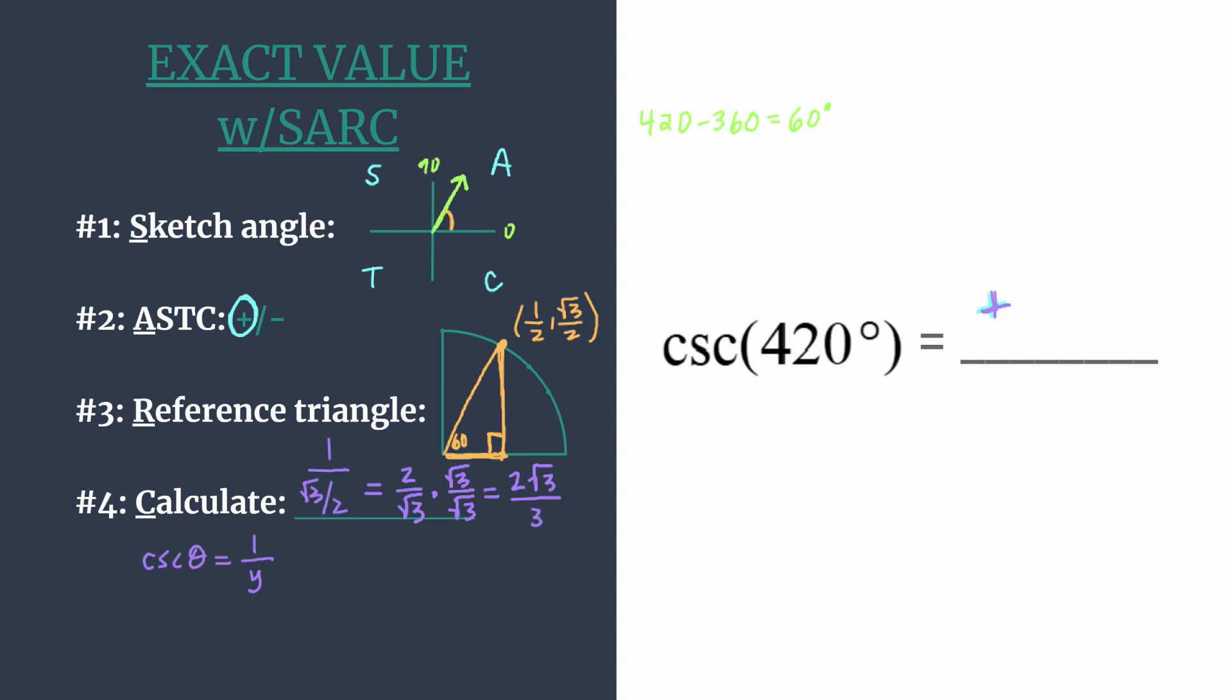So we know the cosecant of 420 degrees is going to be positive two root three over three. And eventually you'll have so much practice with your exact values that if you know you want to find the reciprocal of square root of three over two, you'll just immediately jump and know that it's two root three over three. That'll become a very common value that you know, and you won't even probably have to go through the calculation, but for now it's really nice to do that as well.